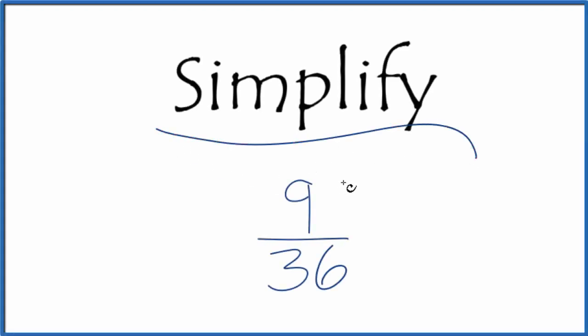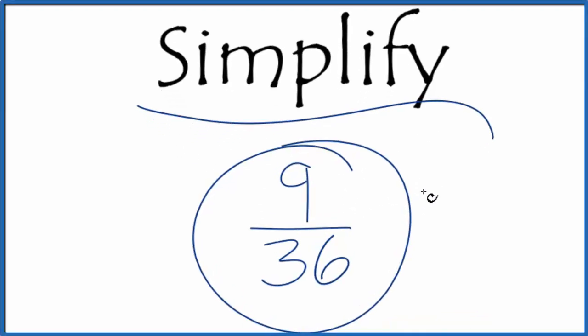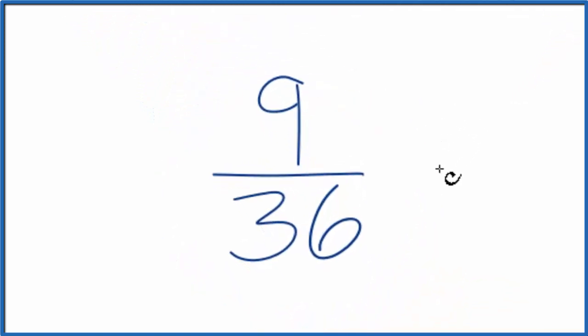If you're asked to simplify the fraction 9/36, here's how you do it. What we're trying to do is find another fraction that's equivalent, has the same value, but it's written in lowest terms. So we want to reduce or simplify 9/36 to lowest terms.